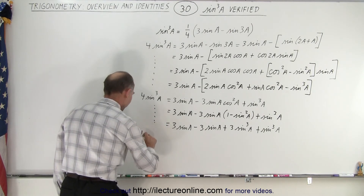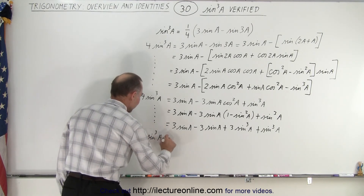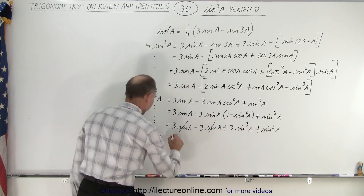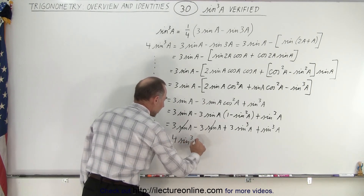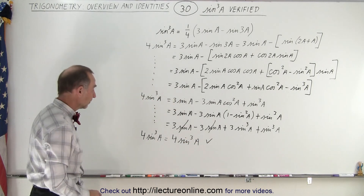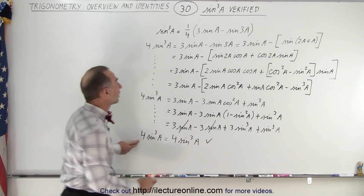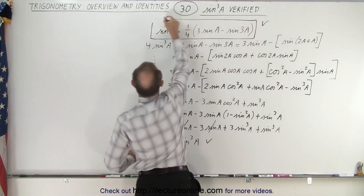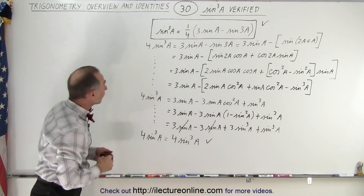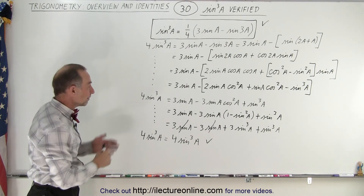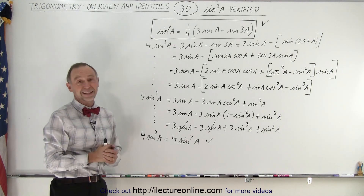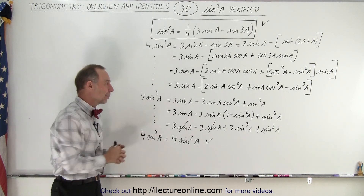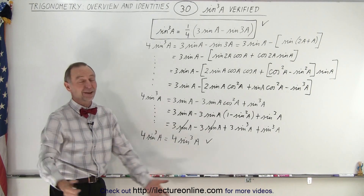Continuing, on the left side we have 4 sin³A. We show that the 3sinA terms cancel with each other, and then 3 plus 1 gives us 4 sin³A, which is equal to one another. So if this is true, then we can say the original identity is true. We have shown that this is indeed the equivalent form for sine cubed of A. We could also use the technique from video 19 to derive the same result.